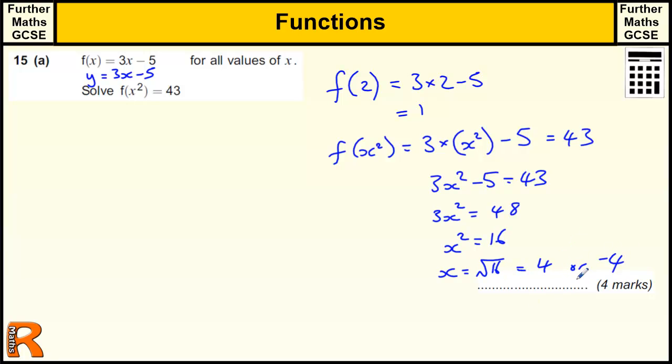Or 4 and minus 4 I suppose. So as a 4 mark question, you certainly get one mark for getting something like this, where you put the x squared in for the x, and then getting the equation and then making the first step like adding the 5, and then another mark for getting x squared equals 16, and one mark for getting the 2 answers.